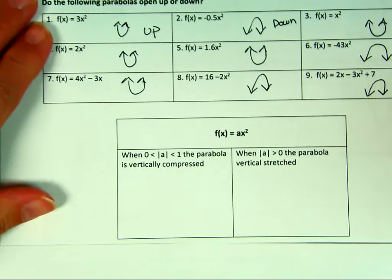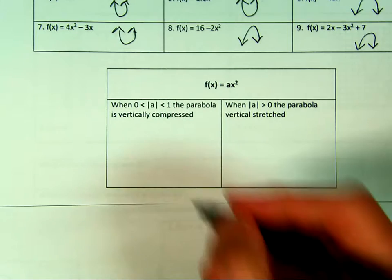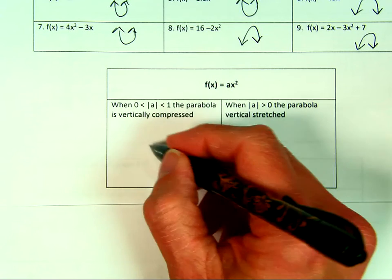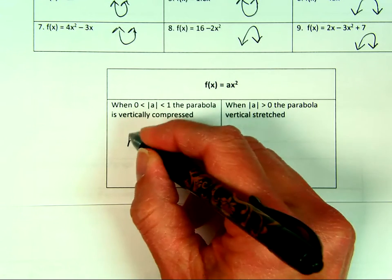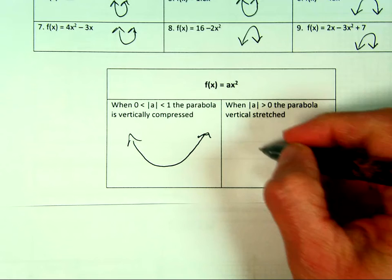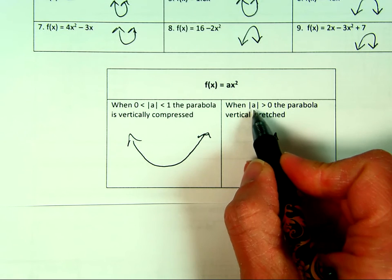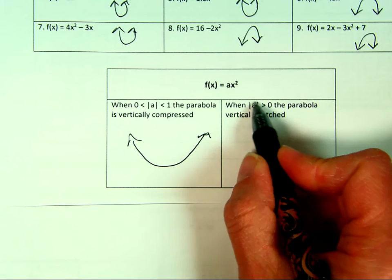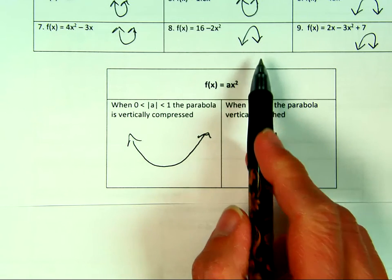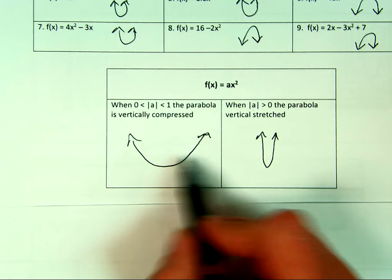What else does a do? A tells us whether it's vertically compressed or vertically stretched. Vertically compressed is like squashing the parabola down from the top — it looks wider. Vertically stretched is like pulling it upward — it looks skinnier. We take the absolute value of a, ignoring the negative sign, to determine stretch or compression. When the absolute value of a is bigger than 1, it's vertically stretched; when it's between 0 and 1, it's vertically compressed.